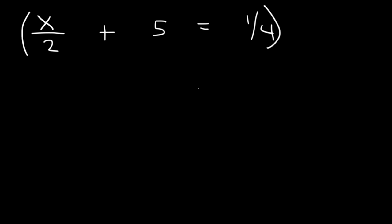We have a 2 and a 4. Now we don't need to multiply and use 8. We could use 8. It'll still work. But we can use a smaller number, 4. 2 and 4 both go into 4. So let's multiply everything by 4.